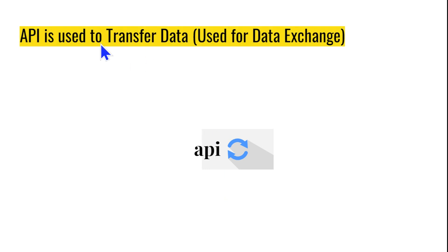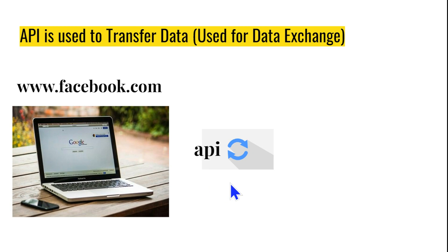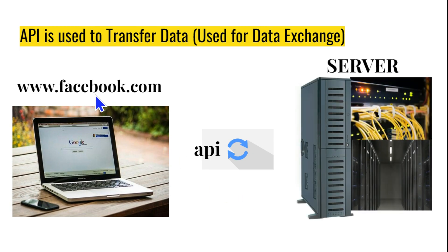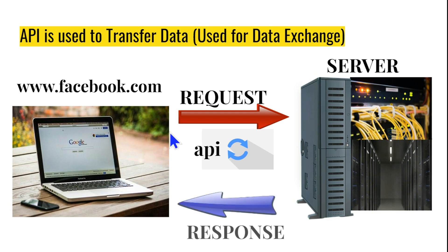API is generally used to transfer data. It is a mechanism for data exchange — to transfer data from one system to another. For example, if I am on my laptop and I type www.facebook.com in a browser, the moment I type that URL it connects with the server, and from the server it receives a response.